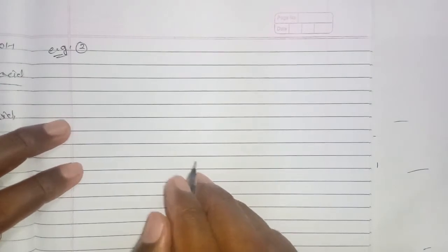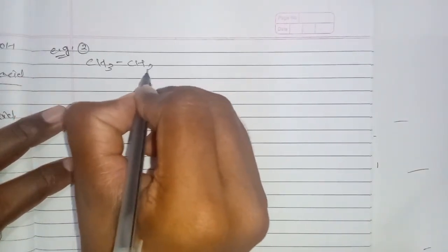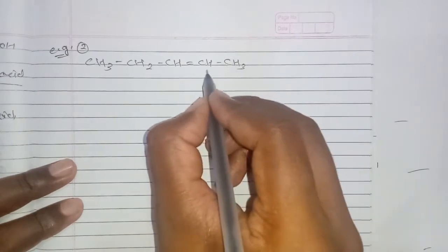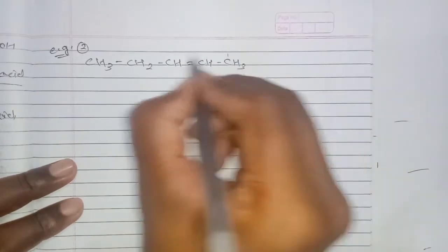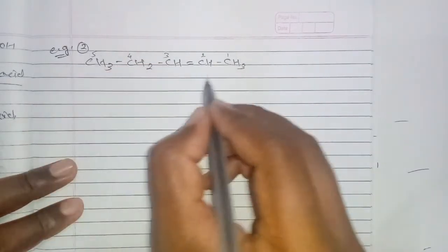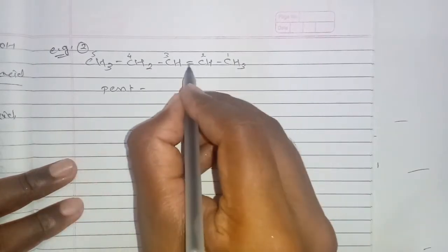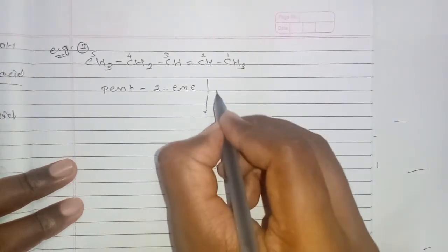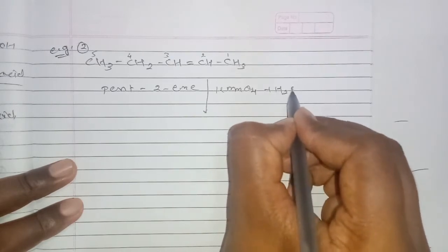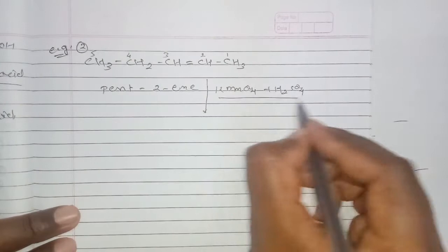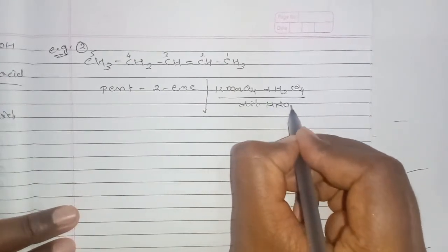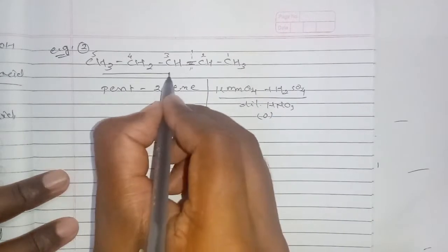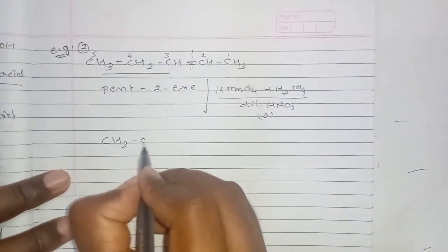Another example: CH3CH2CH=CHCH3 — numbered right to left as one, two, three, four, five carbons — pent-2-ene. Oxidized with potassium permanganate in acidic medium or dilute nitric acid. The double bond breaks and the product CH3CH2COOH (propanoic acid) is formed along with another product CH3COOH (acetic acid).